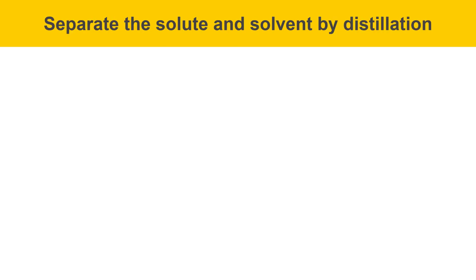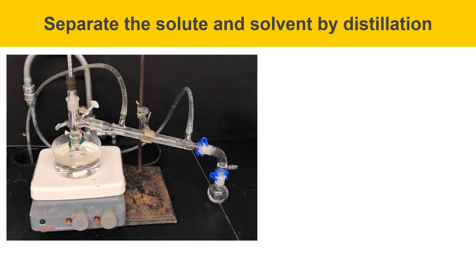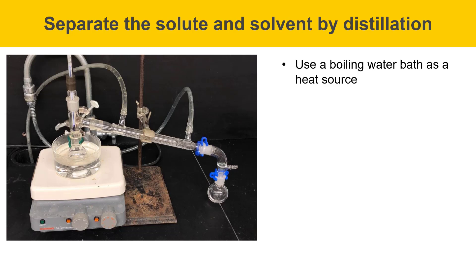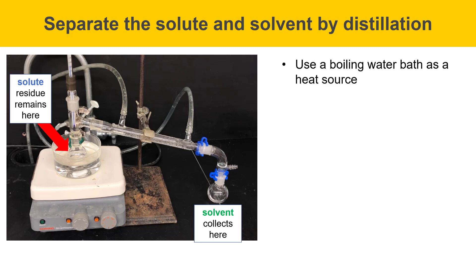This slide describes the separation of the solute and the solvent by distillation. Here's a picture of the apparatus that you'll be using — it's the same as other distillation apparatuses we've set up in the past. However, we're going to be using a boiling water bath as a heat source. Water boils at 100 degrees Celsius, and that's hot enough to boil each of the three unknown solvents, but it isn't hot enough to boil any of the unknown solutes. So the solvent will distill into the collection vessel on the right, and the solute will remain as a residue in the flask on the left.